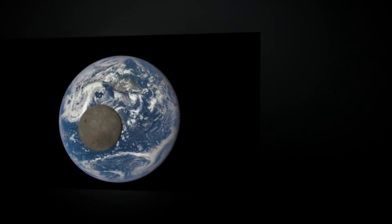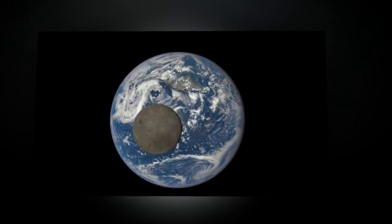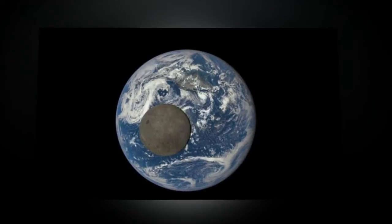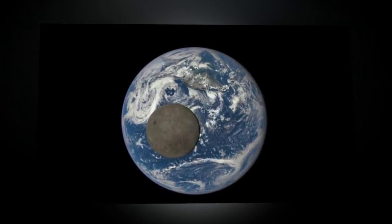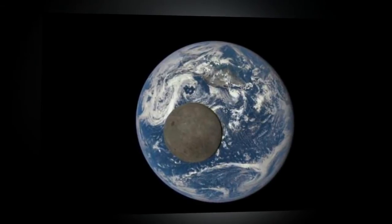In May 2008 NASA's Deep Impact spacecraft captured a similar view of Earth and the Moon from a distance of 31 million miles away. The series of images showed the Moon passing in front of our home planet when it was only partially illuminated by the Sun.